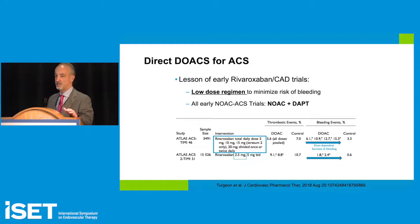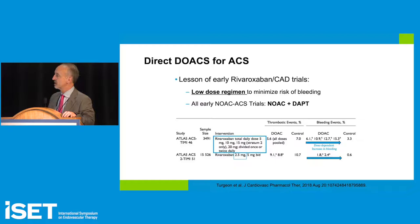Looking at the totality of the ACS trials, we learned that the low-dose rivaroxaban regimen was effective at minimizing bleeding risk while also improving thrombotic events. Interestingly, DOACs were always paired with dual antiplatelet therapy, but it turns out we probably only need single antiplatelet therapy for effectiveness, because dual antiplatelet therapy adds to bleeding risk.